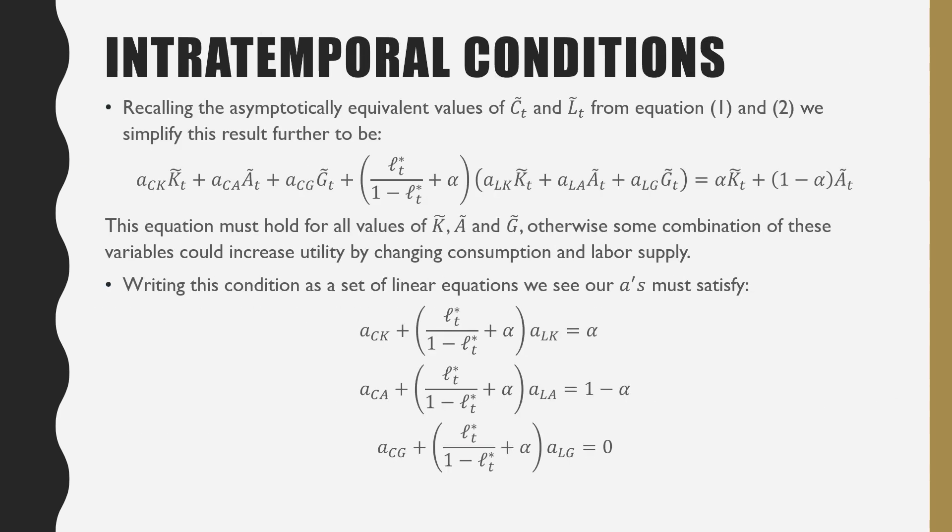Further solving this model, recall that the asymptotically equivalent values of Ct and Lt are from equations 1 and 2 on the first slide. This result could be further simplified to what we have below. This equation must hold for all values of K tilde, A tilde, and G tilde. Otherwise, some combination of these variables could increase utility by changing consumption and labor supply.